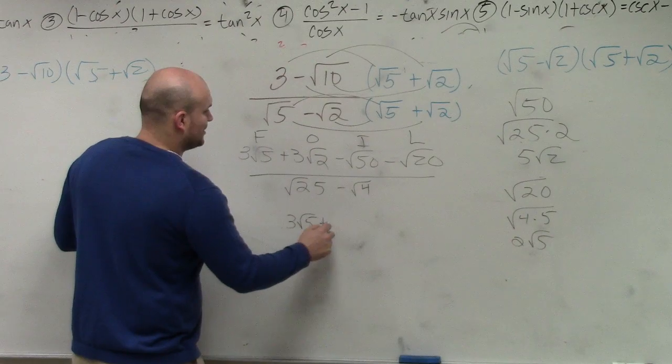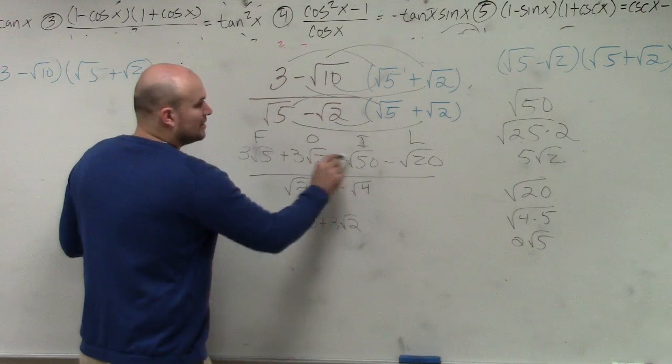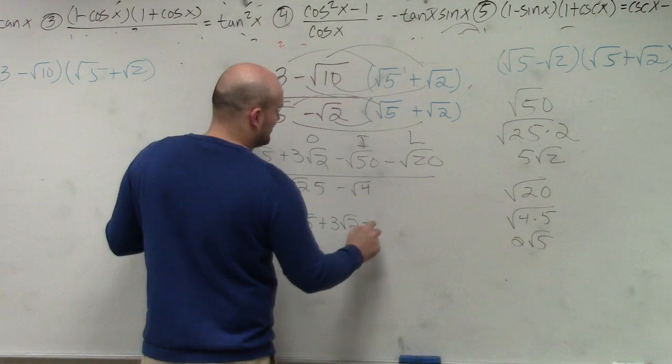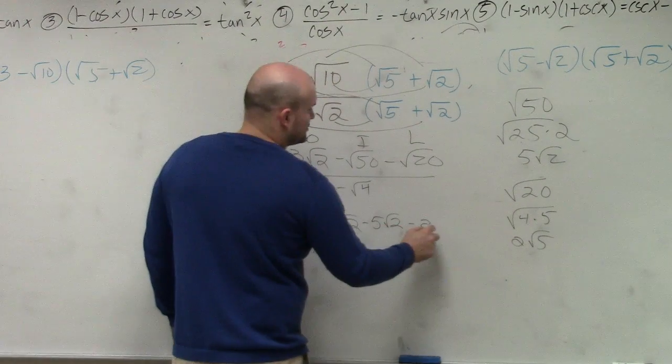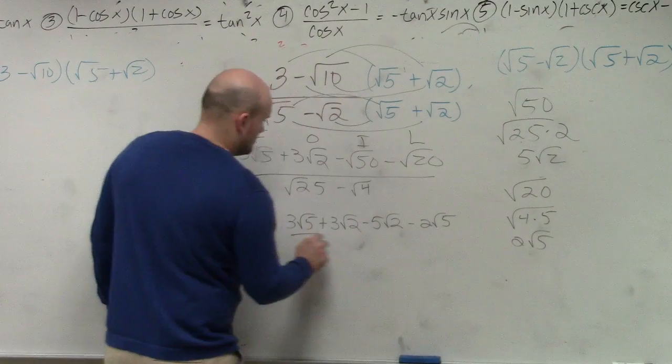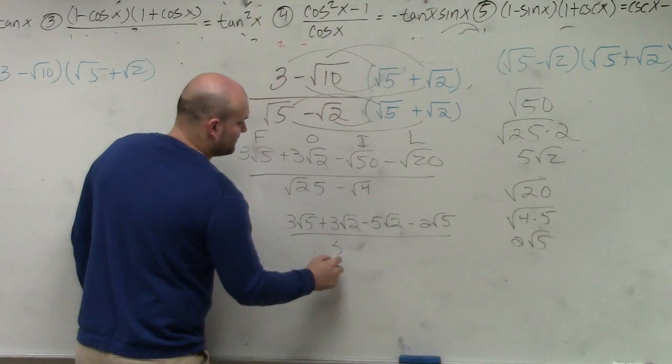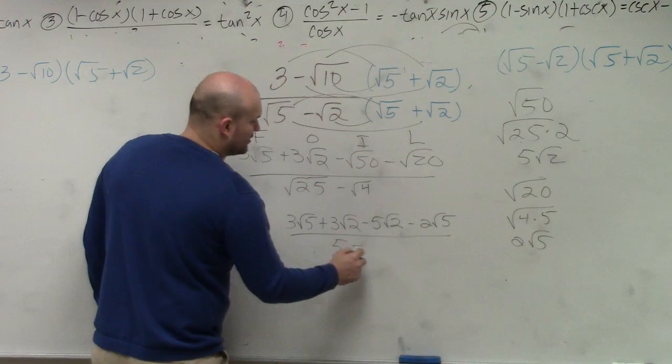Anyways, you have 3 square root of 5 plus 3 square root of 2 minus, instead of square root of 50, I'm going to write minus 5 square root of 2. And instead of square root of 20, I'm going to do 2 square root of 5. All over, square root of 25 is 5, minus square root of 4 is 2.